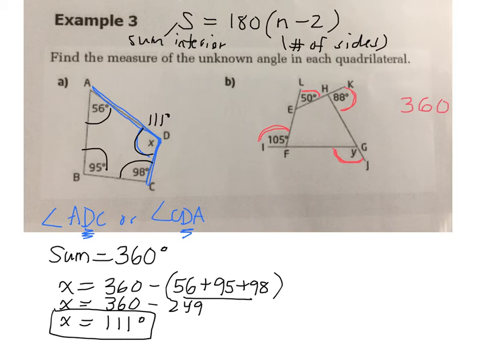360. Okay, so it's kind of the same thing as what we did in the first question. Y is equal to 360 minus the sum of the three angles that we have. So what is Y equal to? Y is equal to 117 degrees. So this angle here is 117 degrees.